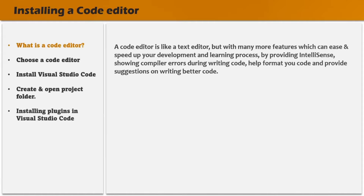A code editor is like a text editor but it has many more features which can ease and speed up our development process by providing intelligence, showing compiler errors during writing code, helping format your code, and providing suggestions on writing better code. So a code editor is more specific for writing programs, and you should always use one because it provides several benefits.